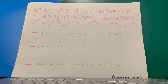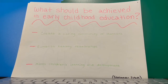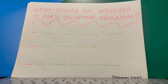What should be achieved in early childhood education? Create a caring community of learners. Recognize each child's unique strengths and support the full inclusion of all children, given differences in culture, family structure, language, racial identity, gender, abilities and disabilities, religious beliefs, or economic class. Help children get to know, recognize, and support one another as valued members of the community.